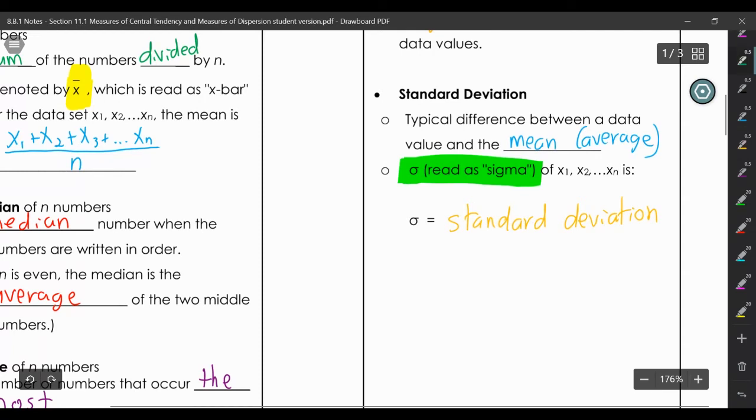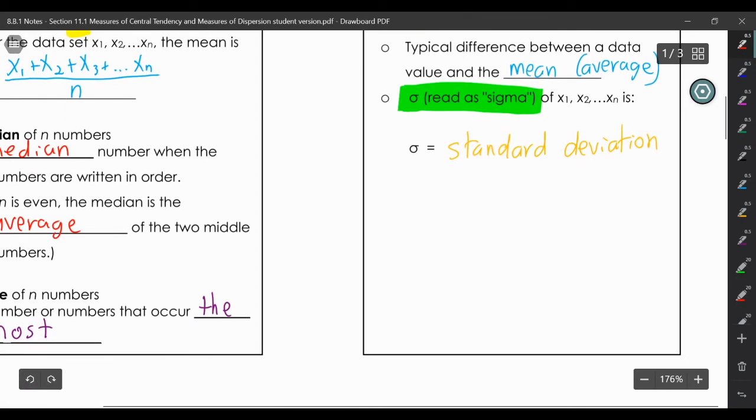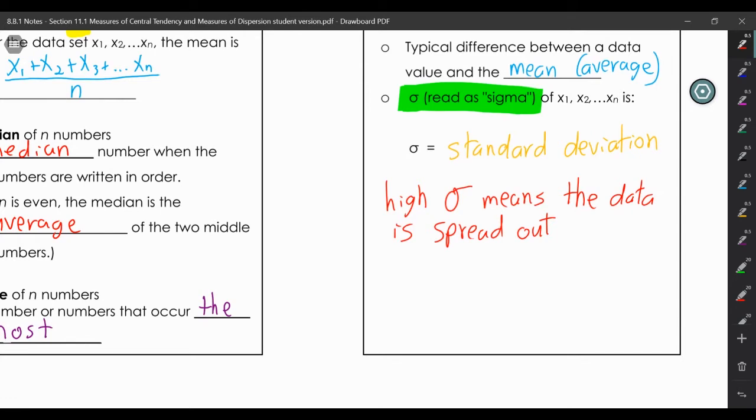The SAT does talk about standard deviation in some problems. What they expect you to know is that a high standard deviation means the data is spread out. Think about the age of the teachers in your school - the age is pretty spread out. You have some young teachers, some middle-aged teachers, and some older teachers. So that data is pretty spread out.